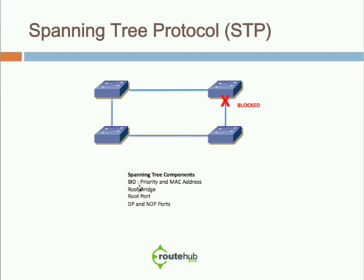The root bridge is determined by the lowest priority, or if priorities are the same, by the lowest MAC address. Next, the root port is chosen on the other switches — one port per switch is designated as the root port, which is the port closest to the root bridge, considering path cost. If the link is Gigabit or 10 Gig, that makes a difference on what the root cost would be.